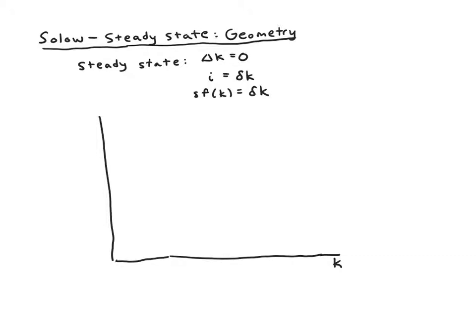f(k) should have diminishing returns. As you add more capital, output will increase but not at the same rate. If you start with nothing and add a little capital, that helps a lot, but as you add more from a thousand to a thousand and one, that probably won't do much. So the slope will go up but flatten out.